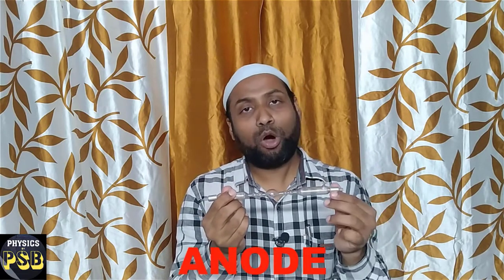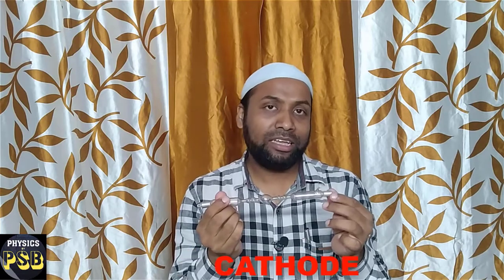Here, these two ends are called electrodes. A terminal which is connected to the positive of the induction coil is called the anode, and the terminal which is connected to the negative of the induction coil is known as the cathode.